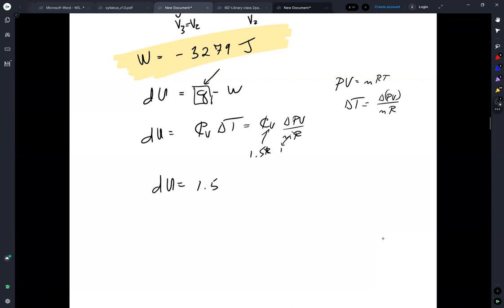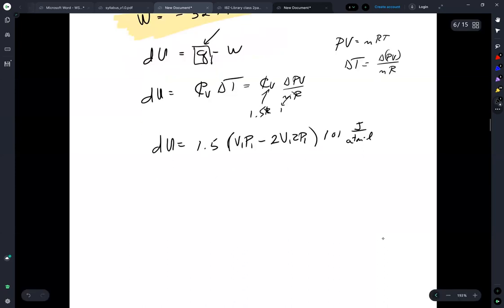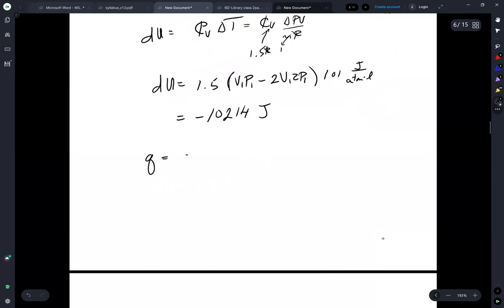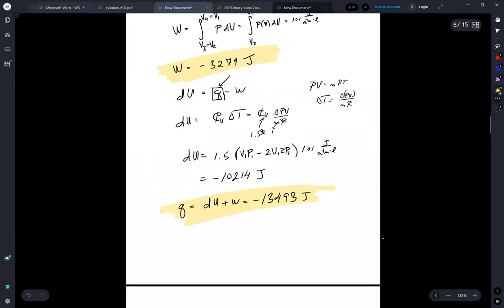And then this delta PV is going back to V1 P1 and it's coming from the state V2 P2, right, because we double the volume and then we double the pressure. Has 101 joule per atm liter which is minus 10214 joule. So Q is equal to dU plus W is equal to minus 13493 joule. So we got U and Q or sorry Q and W.